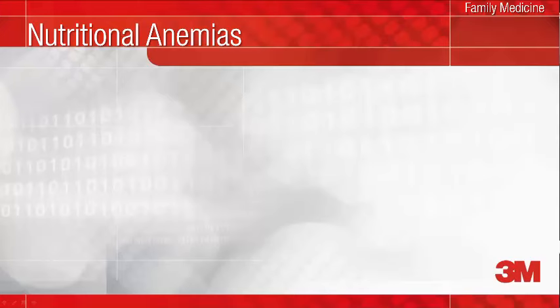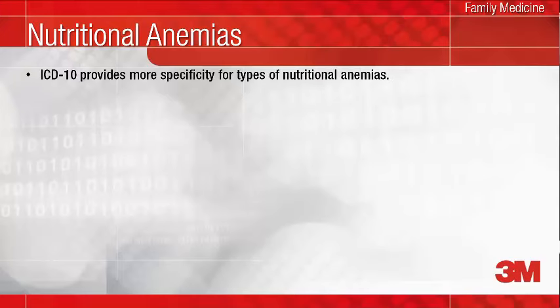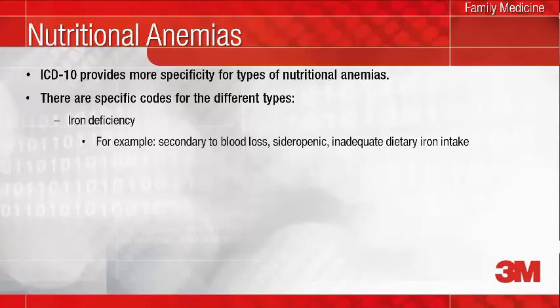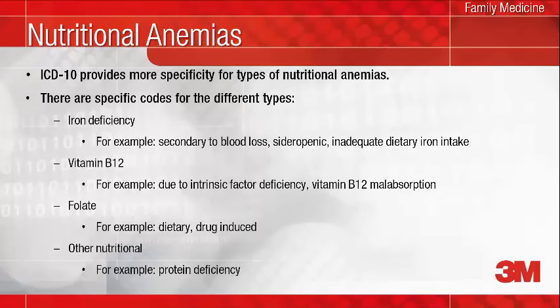New in ICD-10 is the ability to identify specific types of nutritional deficiency anemias. In ICD-9, different types of anemia were grouped under a generic code such as folate deficiency anemias. There are now specific codes for the different types of iron, vitamin B12, folate, and other nutritional deficiency anemias, such as vitamin B12 deficiency due to selective vitamin B12 malabsorption with proteinuria, or drug-induced folate deficiency anemia. Therefore, it's important to detail the specific type of deficiency anemia in your notes. Remember that the coding professional cannot simply use or interpret laboratory results to assign a code for iron deficiency anemia.